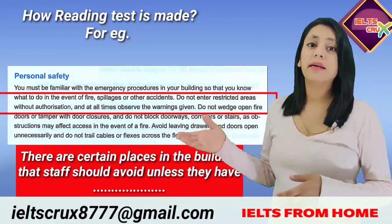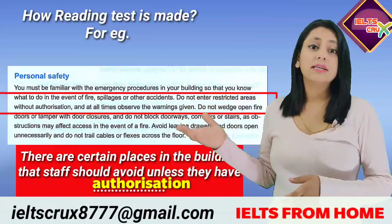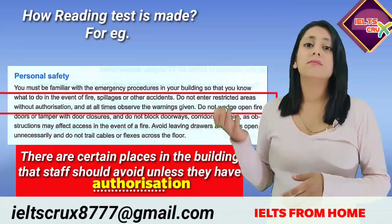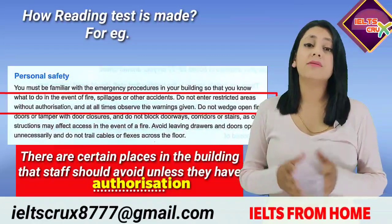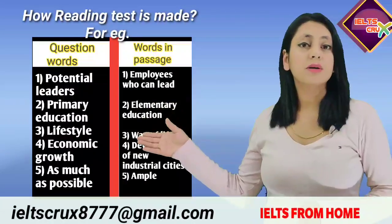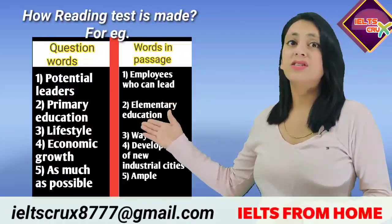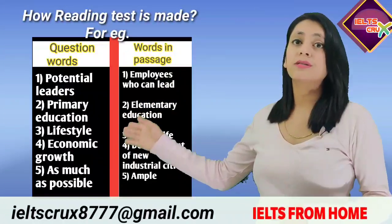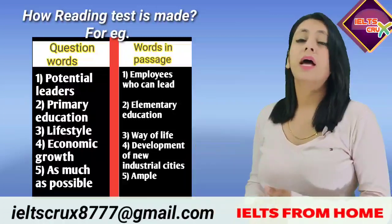So the fill-in-the-blank question would read: 'There are certain places in the building that staff should avoid unless they have ___.' The blank answer is 'authorization.' The lines have the same meaning but are written differently using synonyms. Similarly, synonyms are used across question types. For example, 'potential leaders' in a question corresponds to 'employees who can lead' in the passage; 'primary education' corresponds to 'elementary education'; 'lifestyle' corresponds to 'way of life'; and 'economic growth' can also be paraphrased.